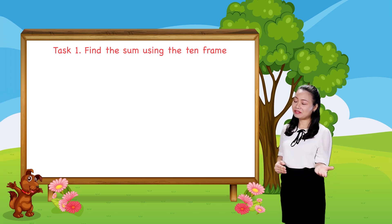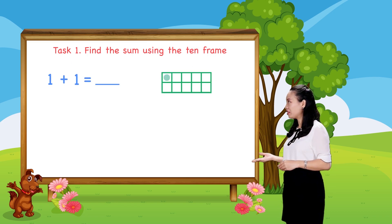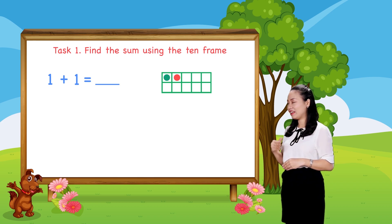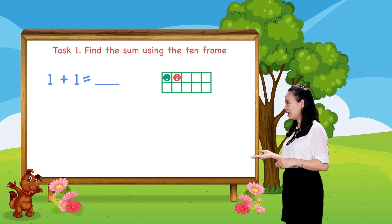Now, let's find the answers together. First, to find 1 plus 1, we draw 1 dot. Then, 1 more dot in the 10 frame. Then, count the total number of dots to find the sum. Let's count. 1, 2. So, 2 dots in total. Therefore, 1 plus 1 equals 2.